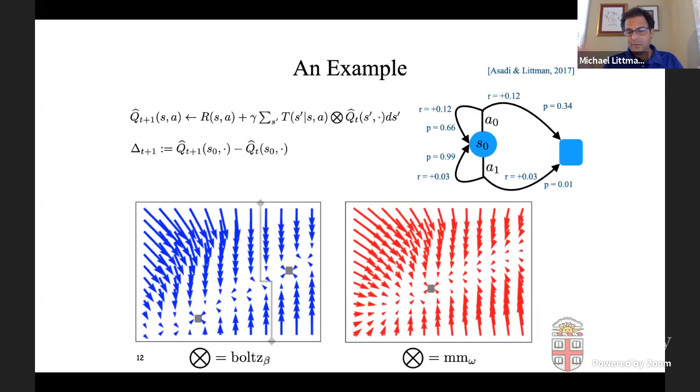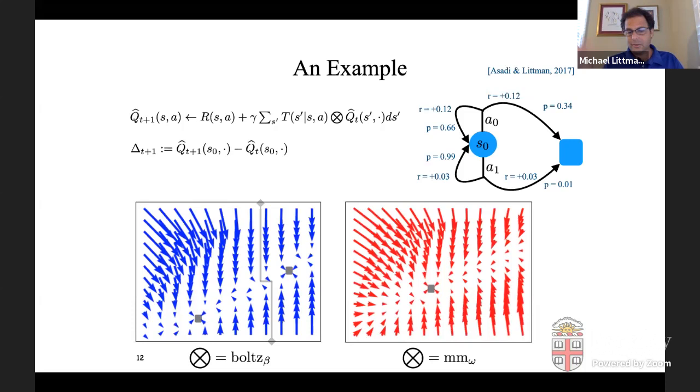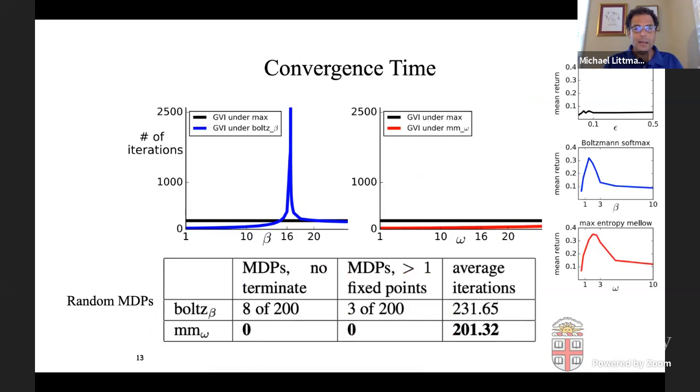Mellowmax on the other hand, we can pick some value of its parameter and we get this sort of nice vector field. That's all going to a fixed point. So single fixed point, and it gets there relatively rapidly. In fact, we can actually do that calculation. We can say for each of the possible settings of the beta parameter in the Boltzmann operator, how many iterations does this take before it actually converges to a fixed point?